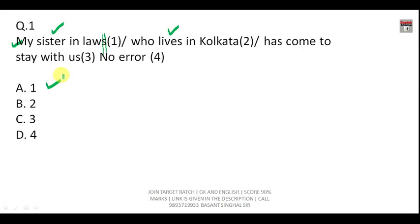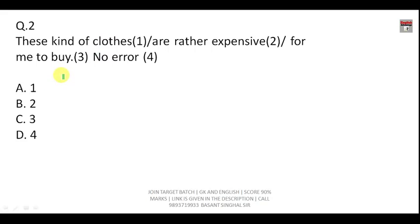Question number two: 'These kind of clothes are rather expensive for me to buy.' Here 'kind' is a countable noun. Since 'these' is plural, 'kind' also has to be plural. You should say 'these kinds of clothes' because we are talking about many kinds, many types. The error is in the first part.